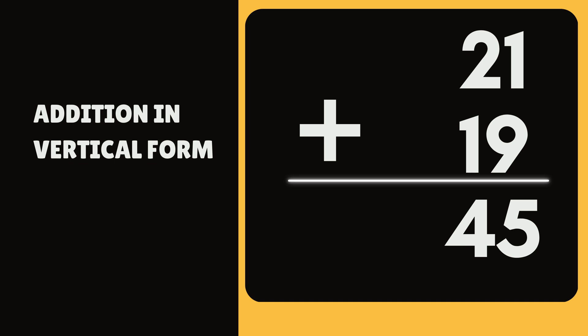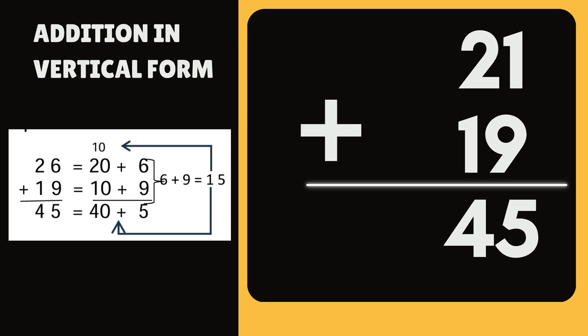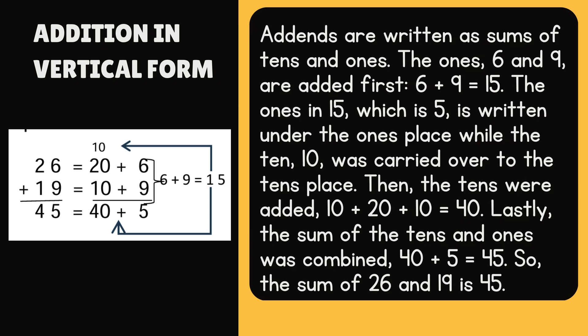Addition in vertical form: 26 plus 19 equals 45. Addends are written as sums of tens and ones. The ones, 6 and 9, are added first: 6 plus 9 equals 15.